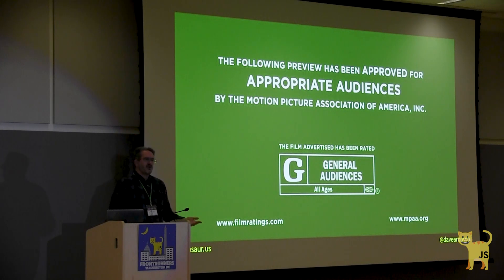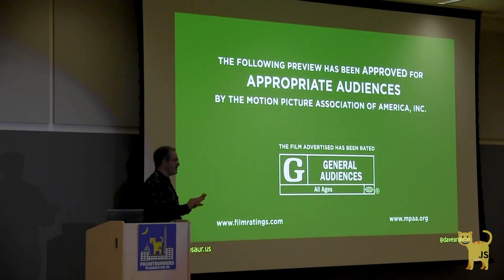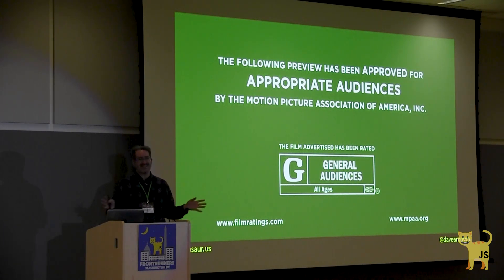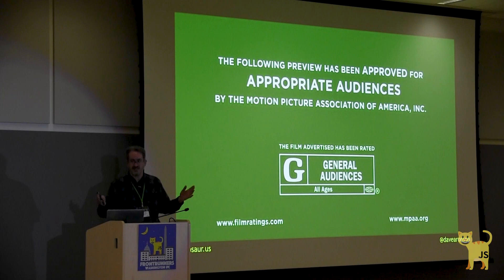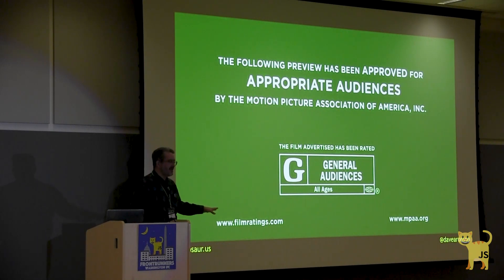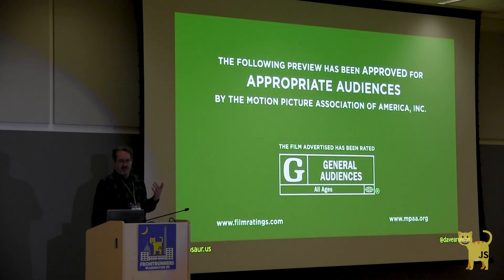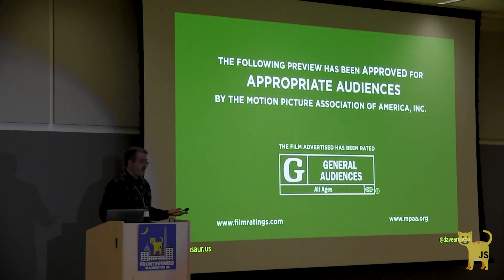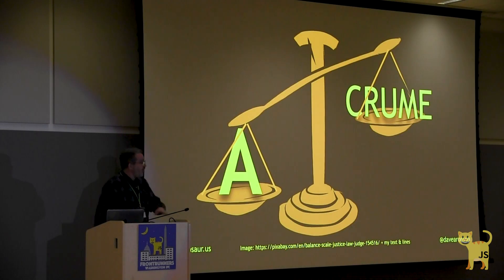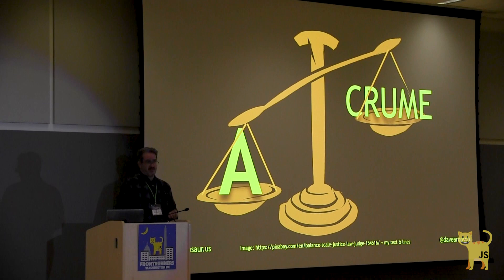If our software doesn't have appropriateness, then nothing else matters. If our software is doing the wrong job, it doesn't matter how well it's doing the wrong job. So appropriateness is not only more important than any one of the others, but even more important than all of the rest of them put together. And to prove the importance of being earnest — I mean appropriate — let's try a little thought experiment.